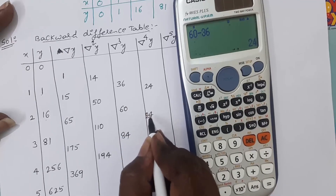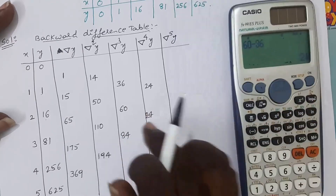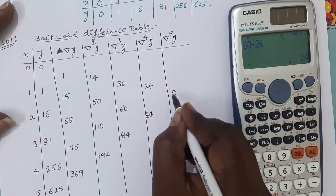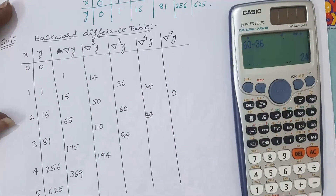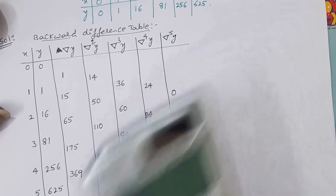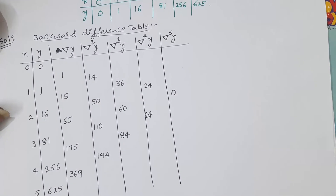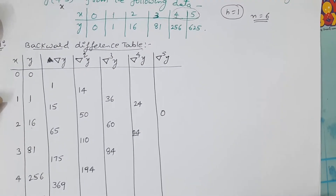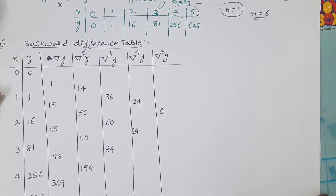Third-order differences: 50−14 = 36, 110−50 = 60, 194−110 = 84. Fourth-order: 60−36 = 24, 84−60 = 24. Fifth-order: 24−24 = 0. This is the fifth-order backward difference.